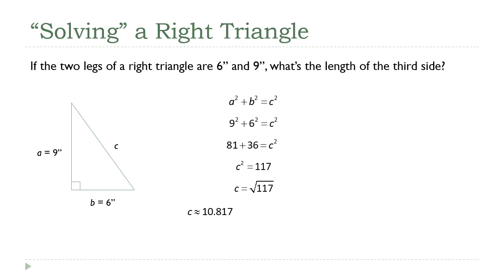There's nothing wrong with having a square root as part of your final result. The one thing you do have to keep in mind is you always have to ask yourself: can we simplify this? Looking at 117, that's equal to 9 times 13. Because 9 is a perfect square, I know the square root of 9 is 3, so 3 times the square root of 13 will be my final answer — there's nothing indicating we need a decimal value.